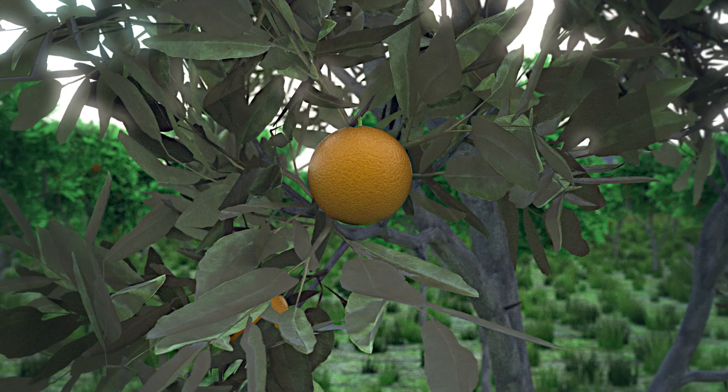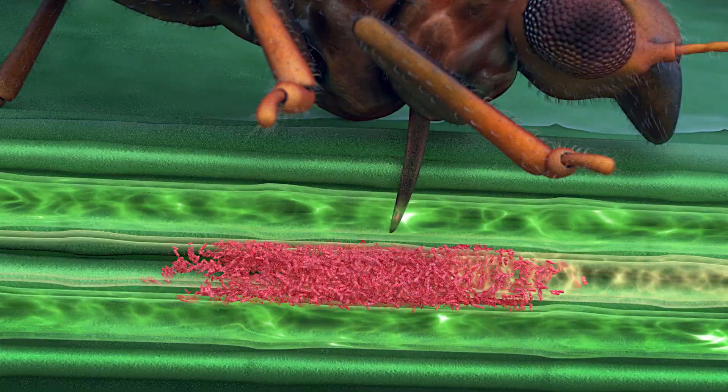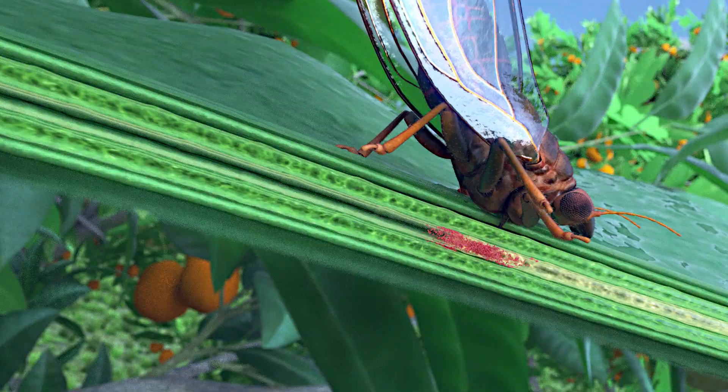After three to five years, the tree dies. If a psyllid sucks at an infected tree, it takes up the bacteria. It then carries them to the next tree.